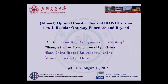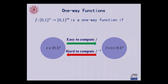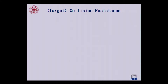Thanks for the introduction. This is joint work with my colleagues in China, and I will be talking about constructions of universal one-way hash functions from specific to more general classes of one-way functions. Before I introduce universal one-way hash functions, I want to mention that they only guarantee a weaker version of collision resistance, which we call target collision resistance.